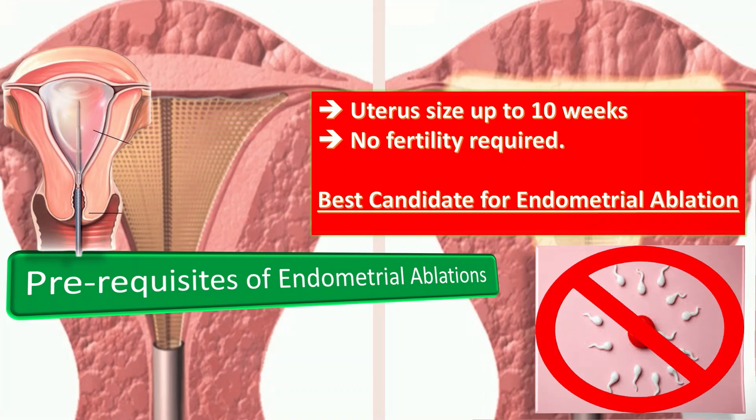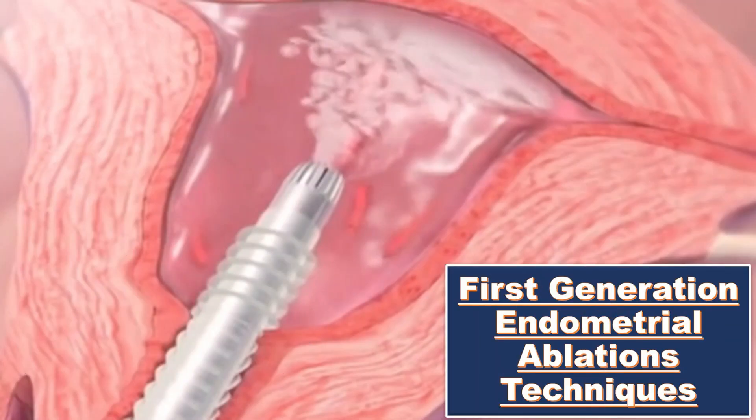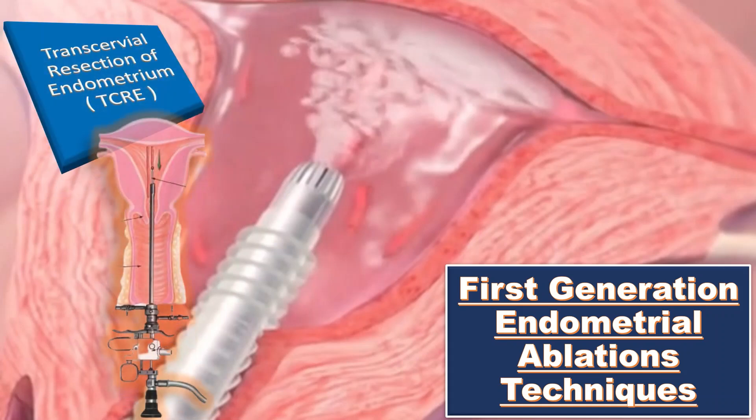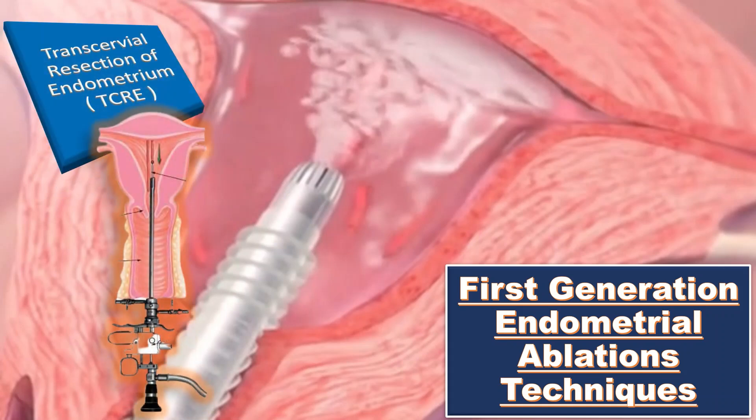There are two generations of endometrial ablations: first generation and second generation. For the first generation, remember the mnemonic TRL, which includes: first, trans-cervical resection of endometrium, also called TCRE.